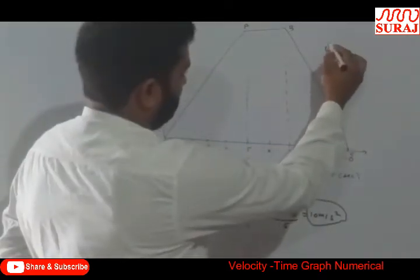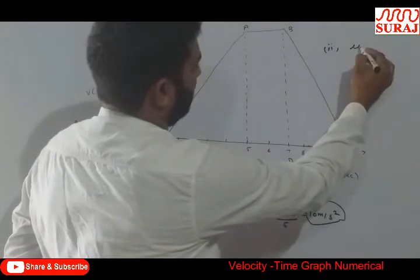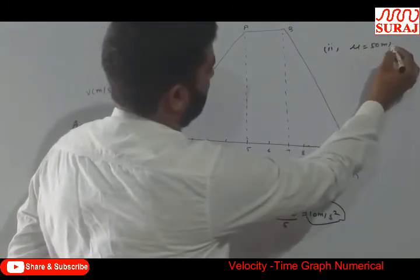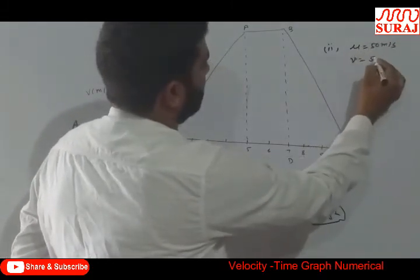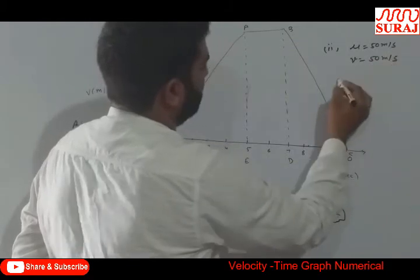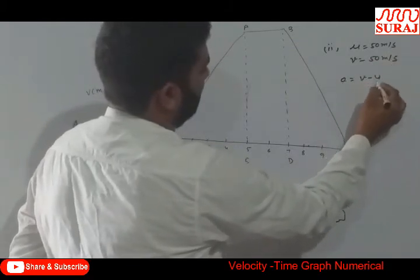In second case, A to B, initial velocity is equal to 50 meter per second. Final velocity is equal to 50 meter per second. So acceleration is equal to V minus U by T.